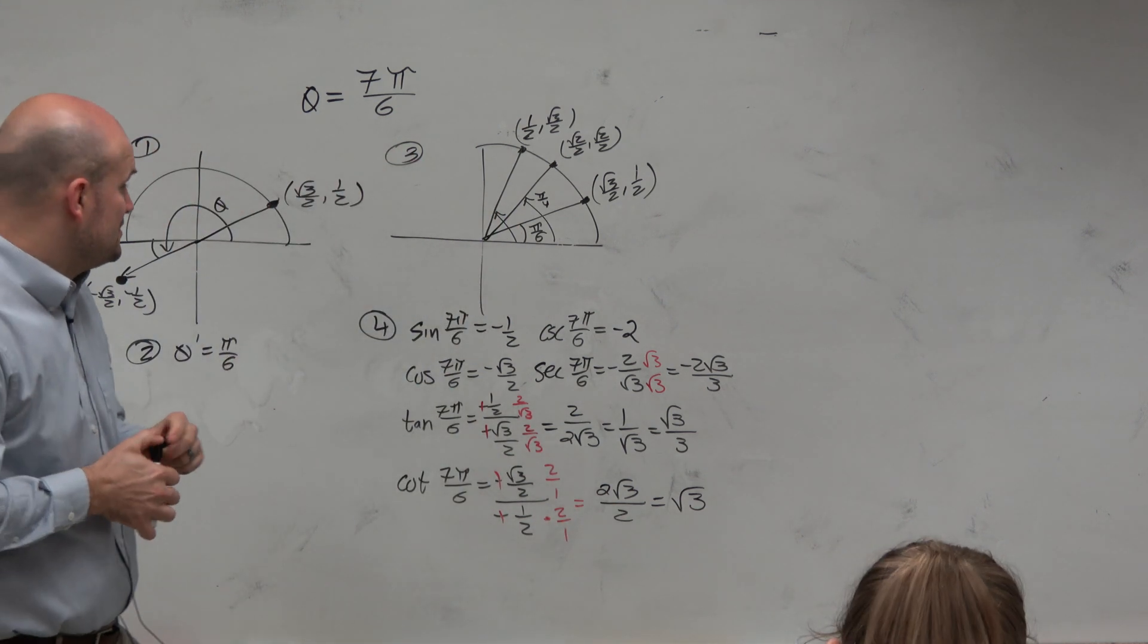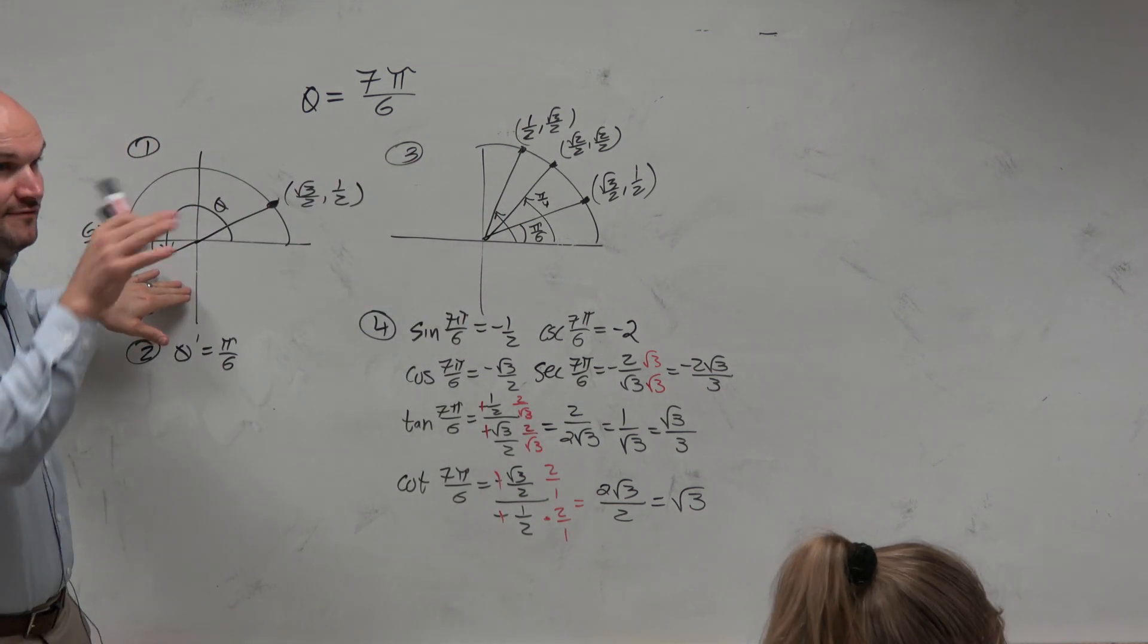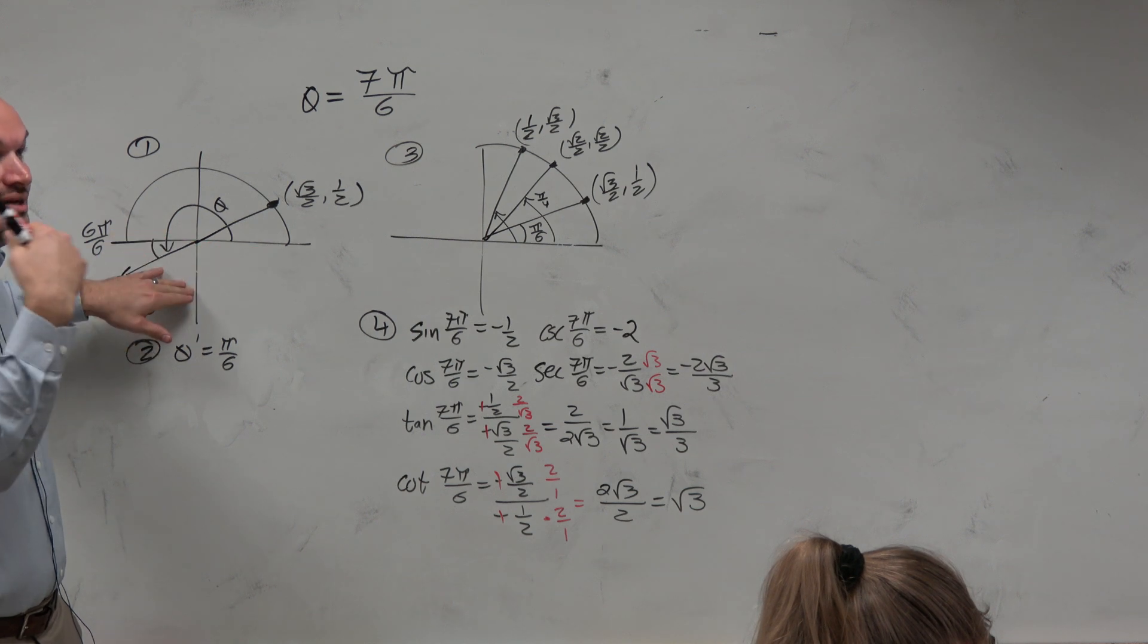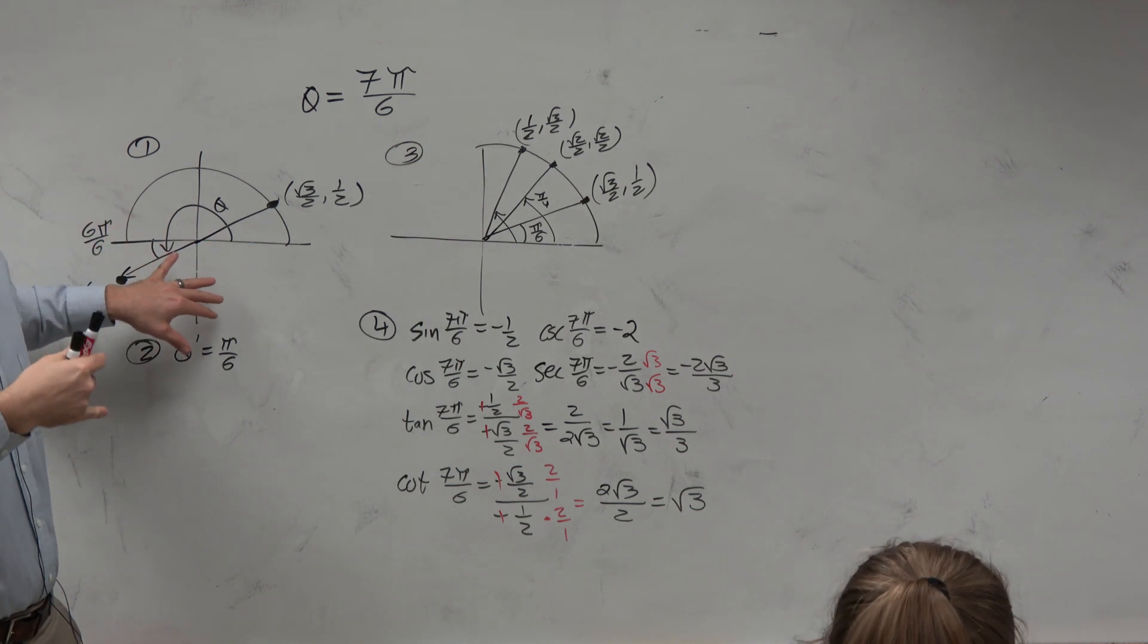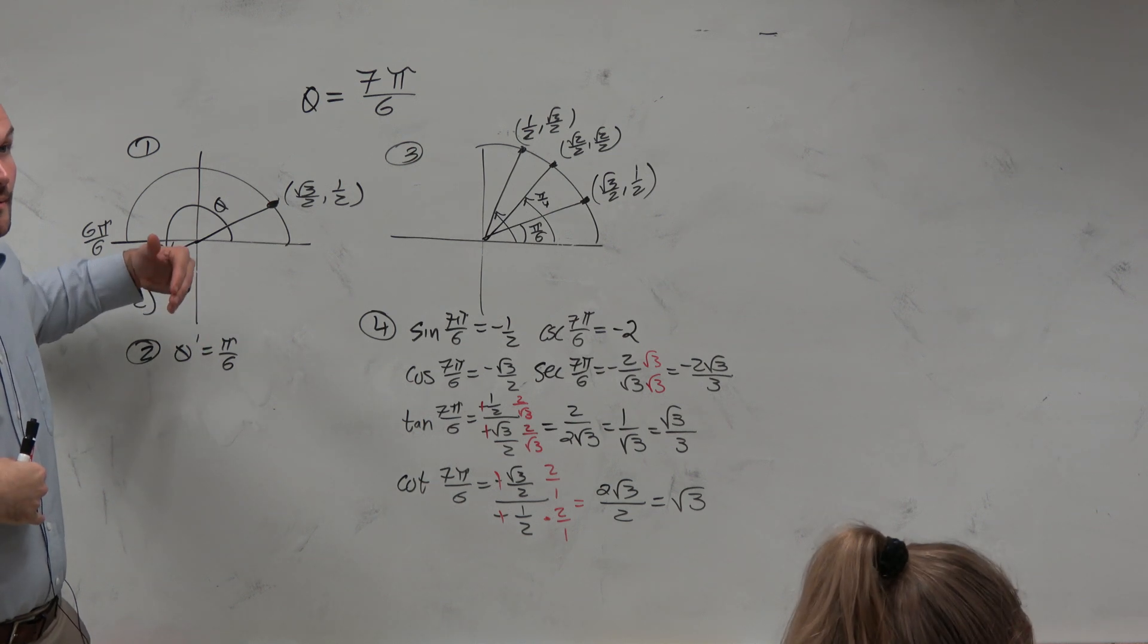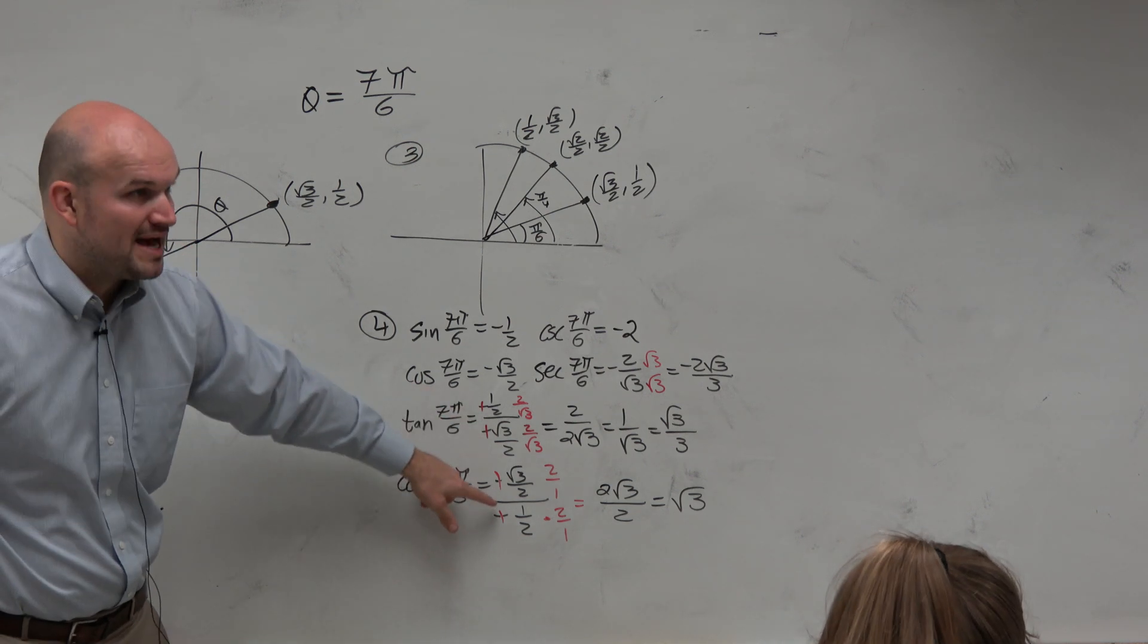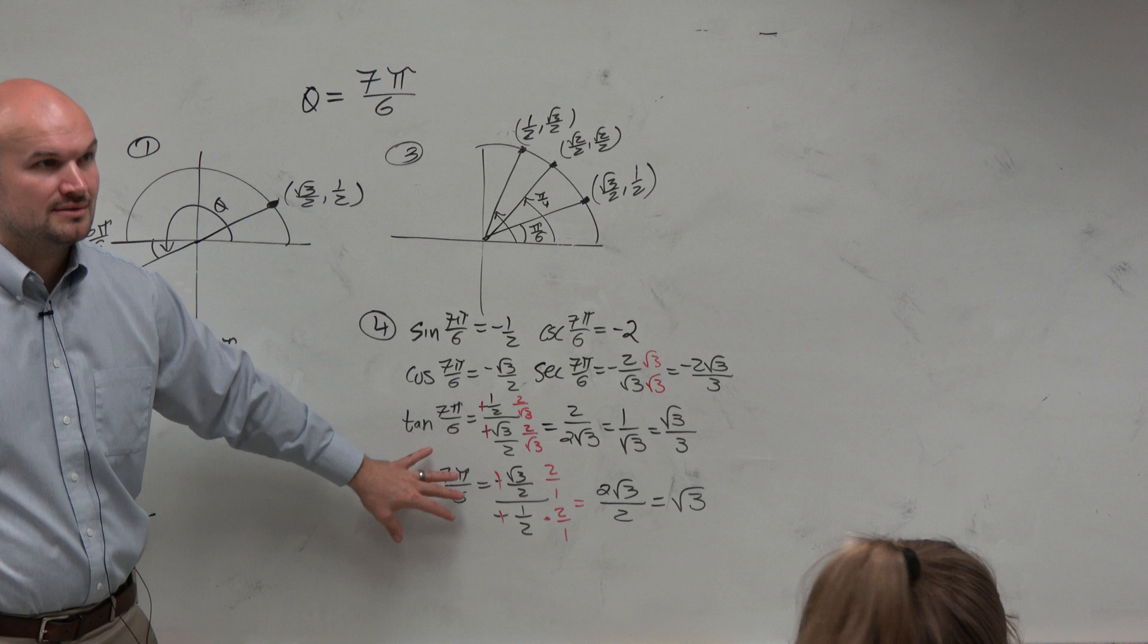And again, let's make sense of this. We know this angle's in the third quadrant. If you guys look at your notes from last class period, sine, cosine, cosecant, and secant must be negative. But tangent and cotangent are positive. And mathematically, we're able to confirm that.